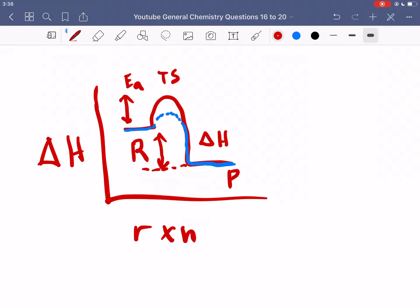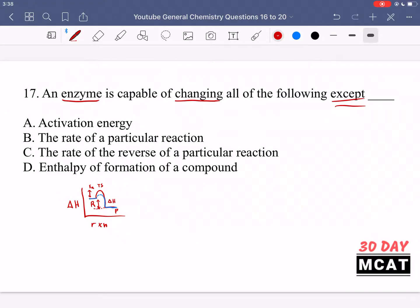That enthalpy difference does not change whether we use an enzyme or not. All that changes is lowering the activation energy. If we lower the activation energy, more molecules are able to get over the barrier so the rate of the reaction increases. Option A, activation energy, yes that's something it changes. B, the rate of a particular reaction, yes. C, the rate of the reverse of a particular reaction, yes that's also increased.